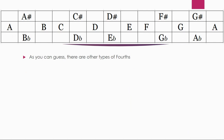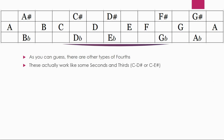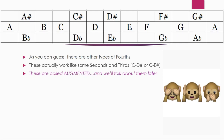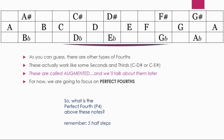As we talk about fourths, you can immediately think: well, I bet there are other types of fourths. C to F sharp — that's still a fourth, but it's a little bit special. These intervals are called augmented, and we'll talk about them later. For now, we're just going to focus on perfect fourths: four notes up, five half steps. So let's practice — what is the perfect fourth above these notes? Remember: four notes up in the alphabet, five half steps.